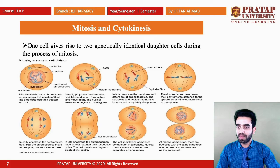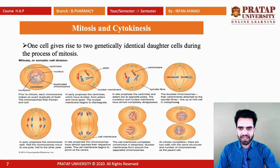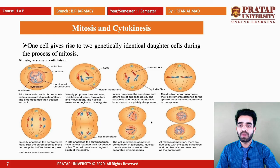Before mitosis, each chromosome makes an exact duplicate of itself and then thickens and coils. Then there is early prophase and late prophase. In late prophase, the doubled chromosomes have their centromeres attached to spindle fibers. They line up at the mid-cell in metaphase. After metaphase comes anaphase, then late anaphase, and at the completion of mitosis there are two cells with the same structure and number of chromosomes as the parent cell.